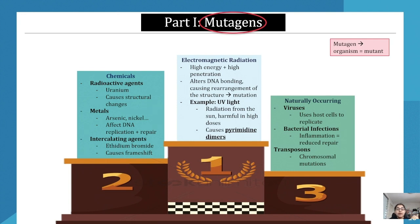Chemical mutagens include radioactive agents like uranium and other chemicals, which cause structural changes. We've also got metals including arsenic and nickel that can affect the DNA replication process. Finally, there are intercalating agents like ethidium bromide, which can cause frameshift mutations — we'll look at what frameshift mutations are in just a moment.